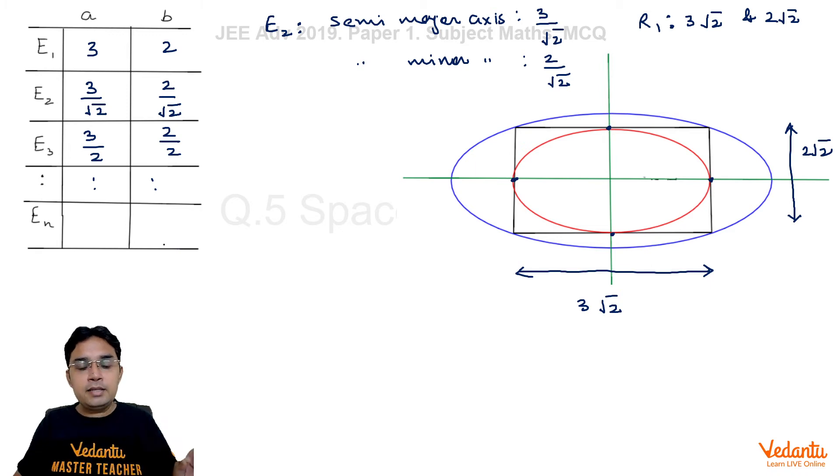So this nth ellipse, if we see, it will be 3/(√2)^(n-1) and 2/(√2)^(n-1). Now let us see what options they have asked.